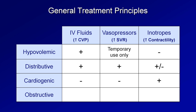Finally, in obstructive shock, it's impossible to generalize about the appropriateness of fluids, vasopressors, and inotropes. And if there is a response to any of those, it's likely only temporary, and definitive relief of the obstruction is still critical. For tension pneumothorax, this is either a chest tube, or if more emergent, needle thoracostomy, which consists of a needle placed into the pleural space via the second intercostal space in the midclavicular line. For cardiac tamponade, this is a pericardiocentesis, a procedure in which a needle is placed into the pericardial space, most commonly via a subxiphoid approach. And in massive PE, depending on the circumstances, this may or may not involve systemic thrombolysis versus embolectomy.